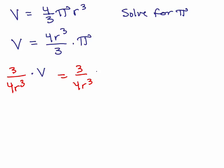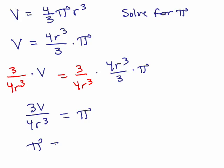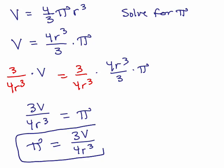Times V on this side and times 4 R cubed 3 times pi on this side. So on the right side, everything cancels except the pi. So we've solved for pi. And on the left side, we have 3V over 4 R cubed. So pi equals 3V over 4 R cubed.